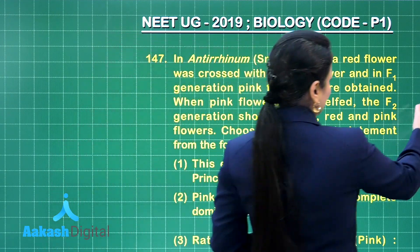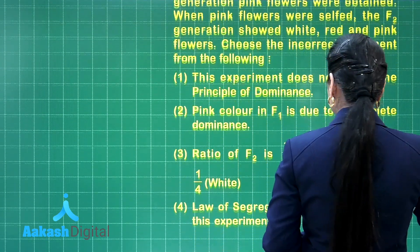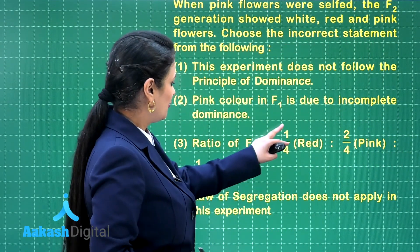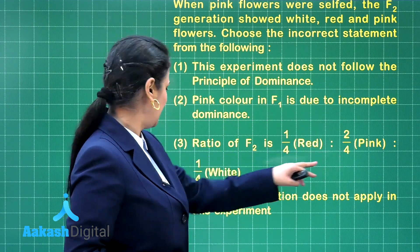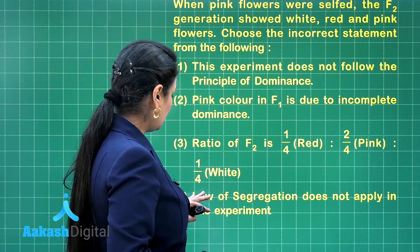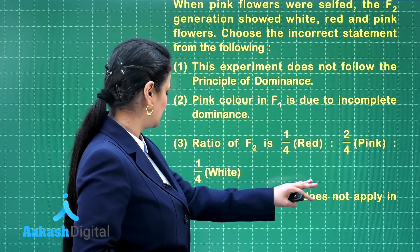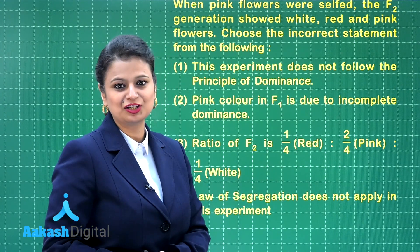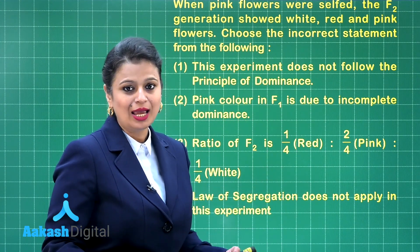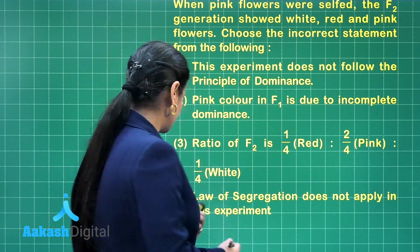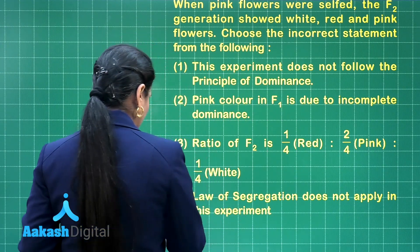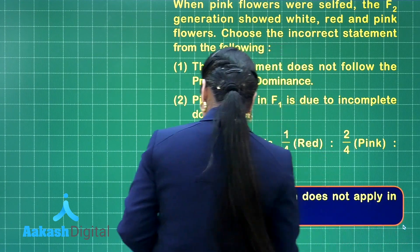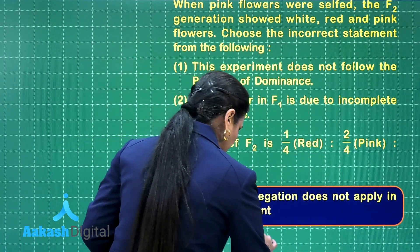Regarding the ratio of F2: it is 1:2:1 — that is, 1/4 red, 2/4 pink, and 1/4 white. The statement that the law of segregation does not apply in this experiment is incorrect, because the law of segregation is a universal law and it applies here as well. So this is the incorrect statement, and the right answer is option number 4.